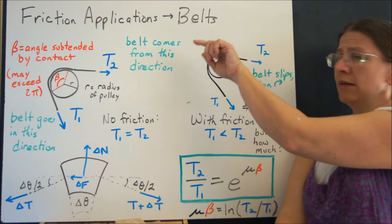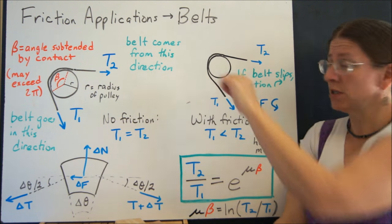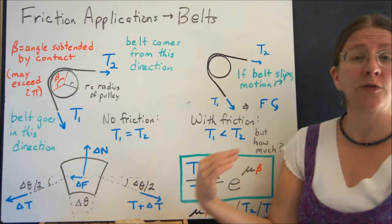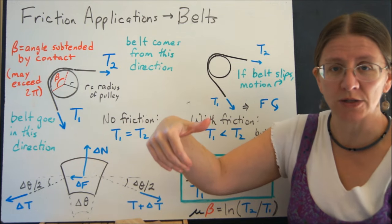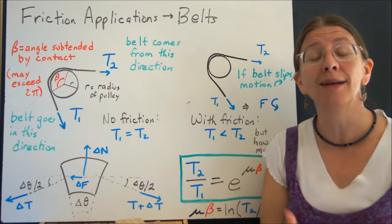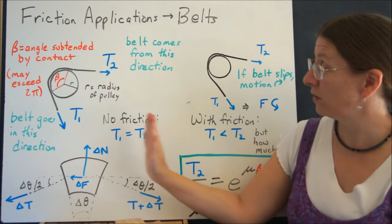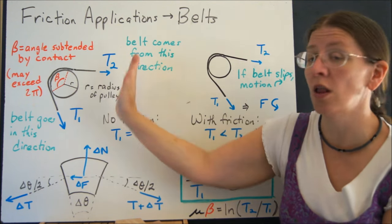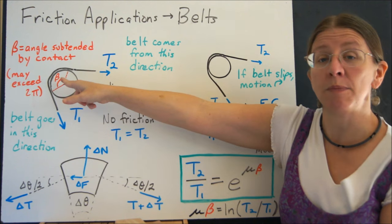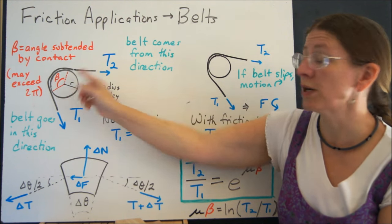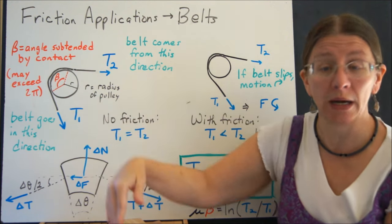This is friction acting here tangent, here tangent, here tangent. It's a force acting in all kinds of different directions, so what do you do with that? You add it up using calculus, so we're going to take this as delta theta goes all the way around, which is where you get to beta. You have a situation where you're going to integrate from zero to beta.